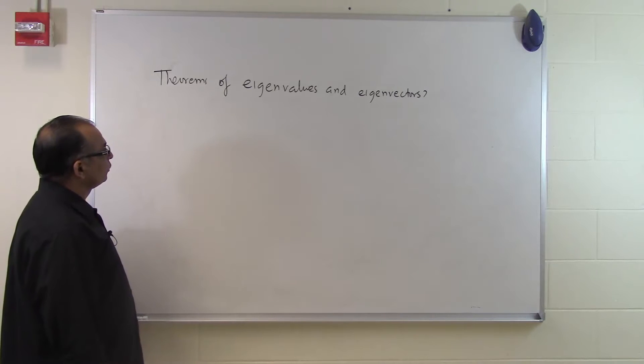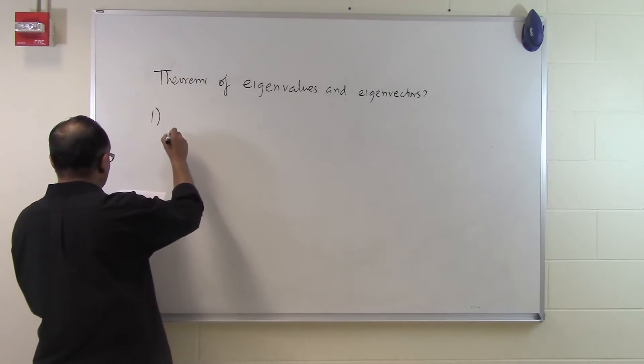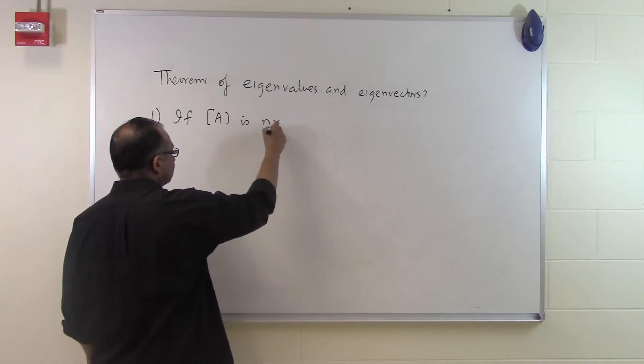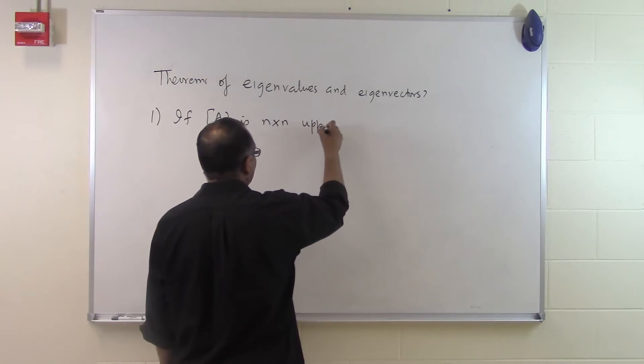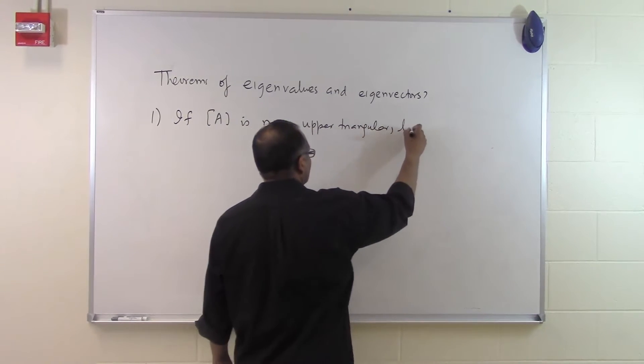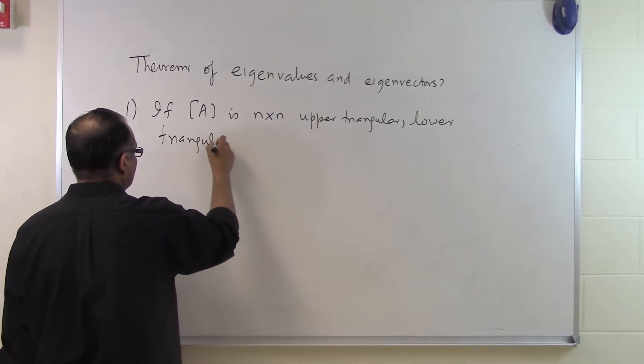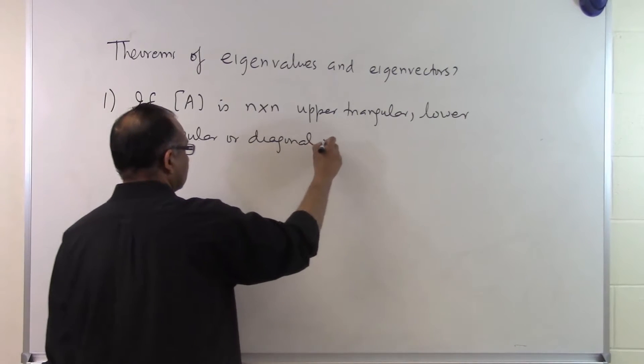In this segment we will talk about some of the theorems which are related to eigenvalues and eigenvectors. One of the first theorems is that if A is a square matrix, but it is upper triangular, lower triangular, or diagonal matrix,